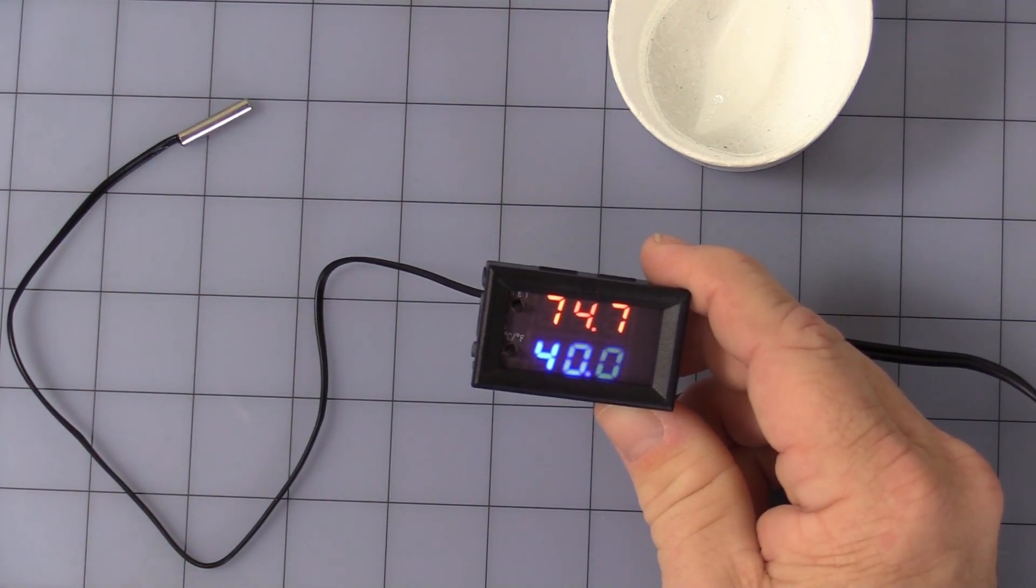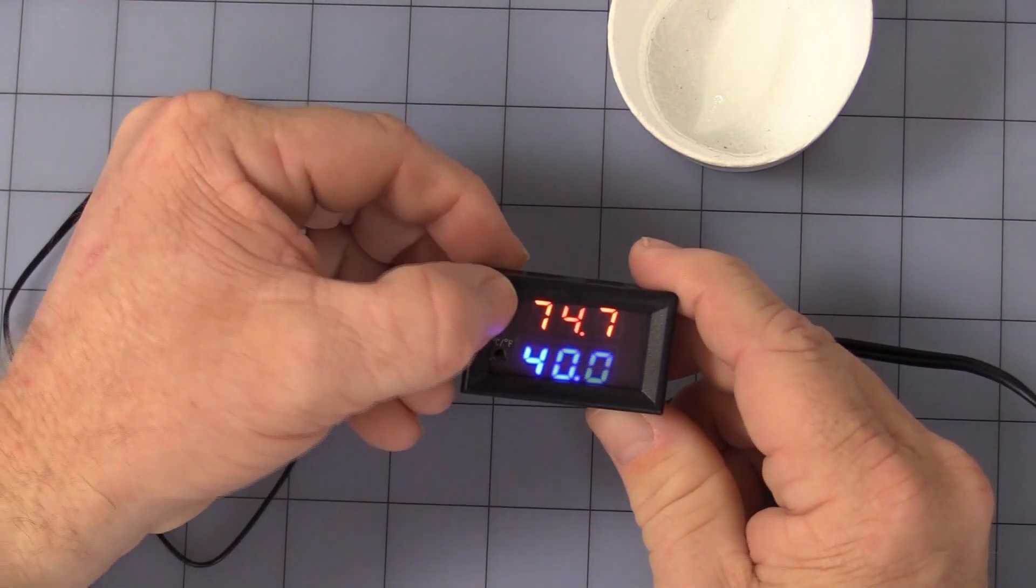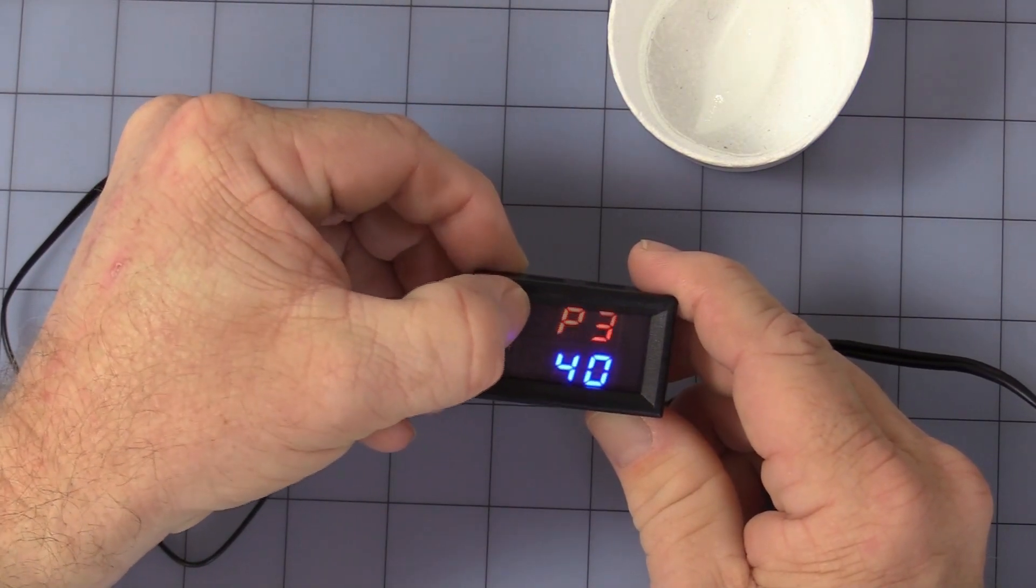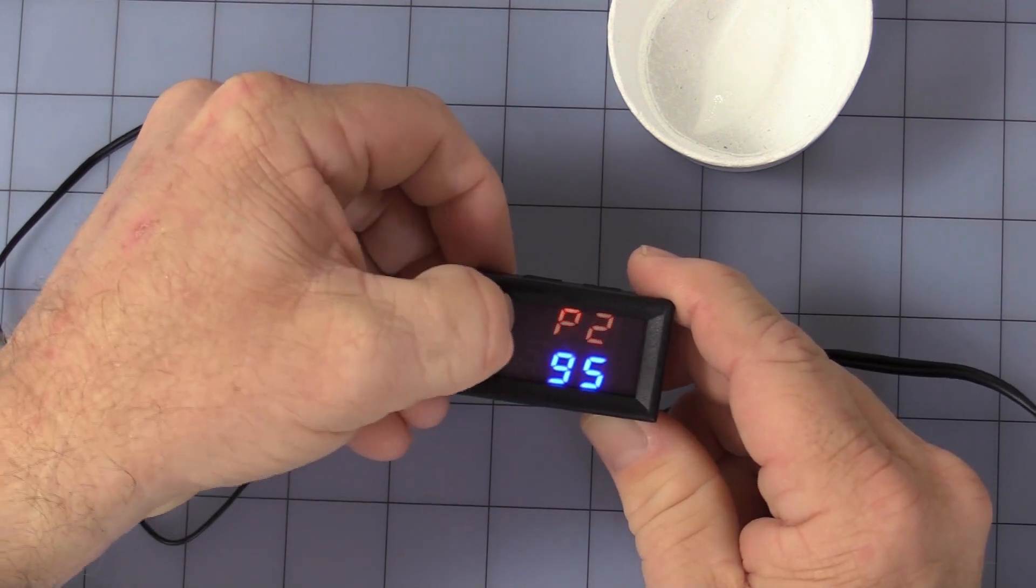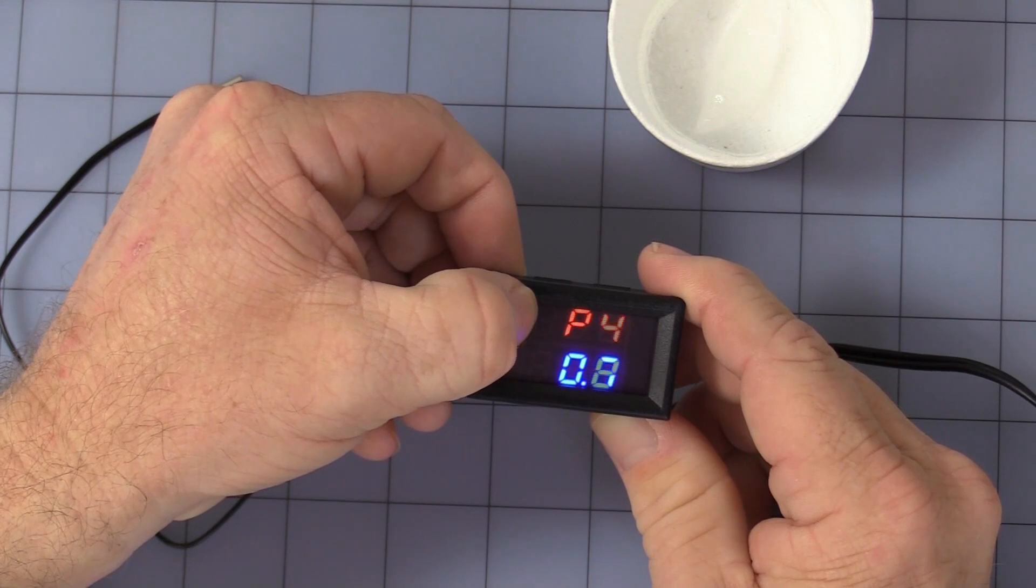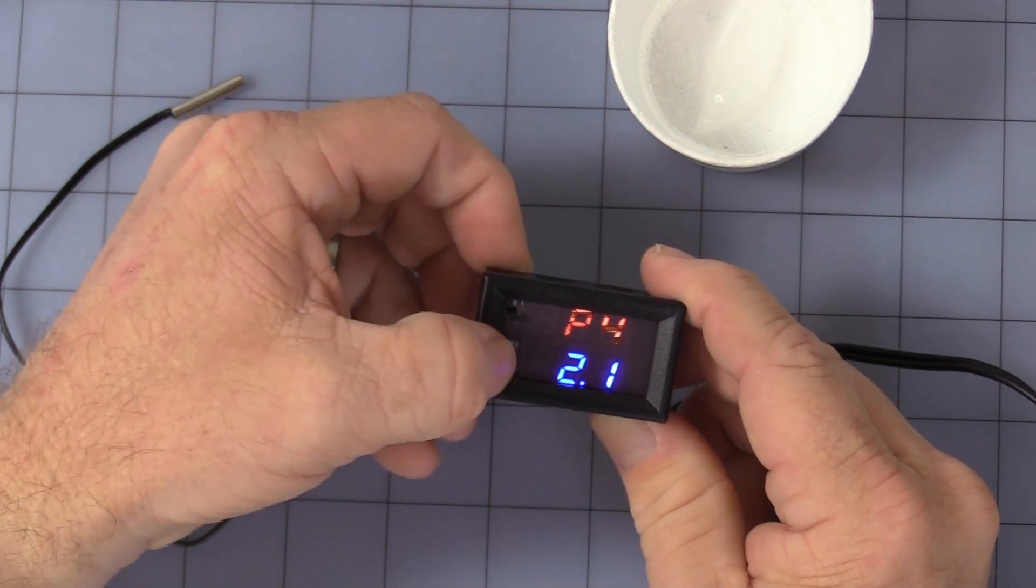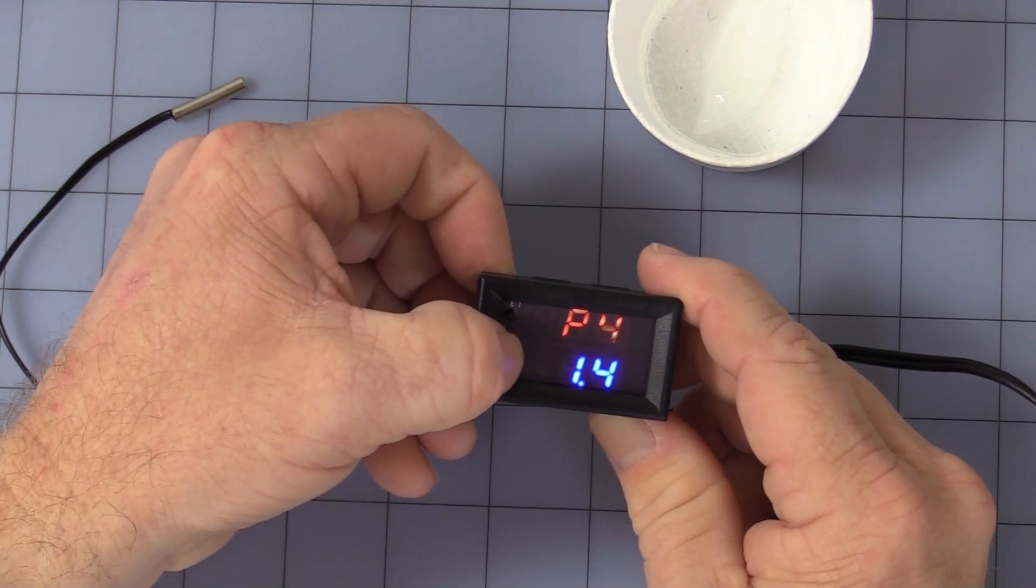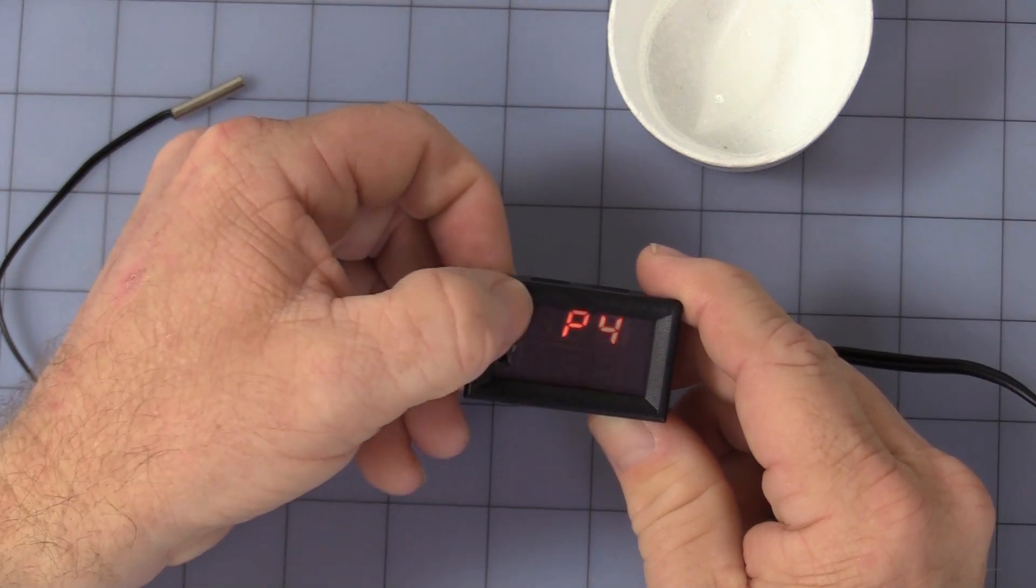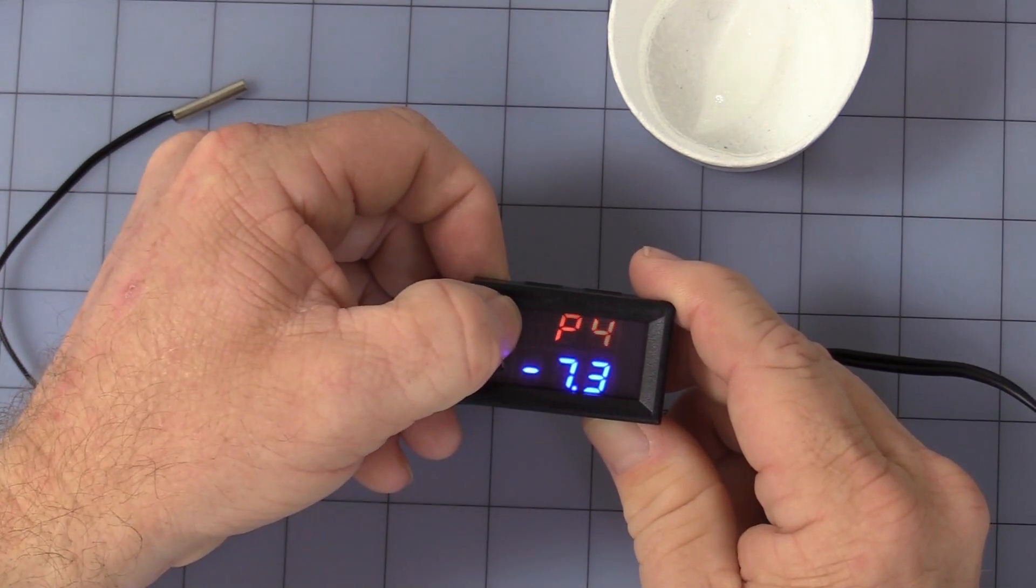Once it stops flashing, it goes back to program. Now, we get into P4, which is a temperature correction. Let's say you run a long-distance cable and you need to correct, compensate for any temperature difference. You can adjust it from plus or minus 15 degrees, but it's factory set at zero.